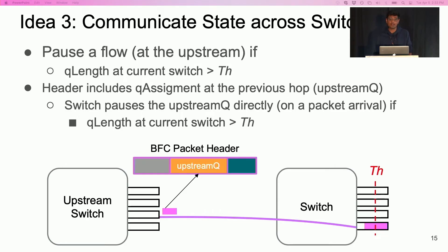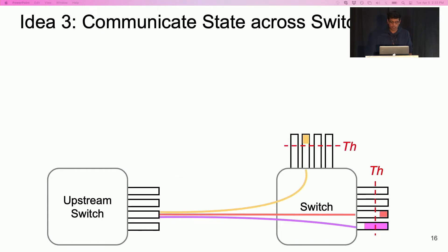Now we know when to pause an upstream queue. We still need to decide when to resume this upstream queue. The challenge is, even with dynamic queue assignment, an upstream queue can be shared by multiple flows. The queue corresponding to these flows can have different occupancy levels. Some of them might be below the pause threshold, while others exceed the threshold.